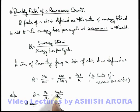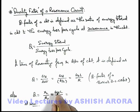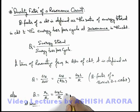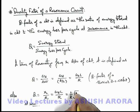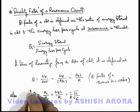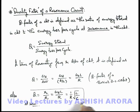Numerically, if you substitute the value of ωᵣ which is written as 1 divided by √(LC), then the same can be given as: substituting 1 divided by √(LC), this gives us the value of (1/R) times √(L/C). This is also an alternate expression for calculation of Q factor whenever required.